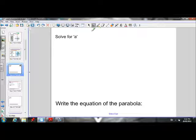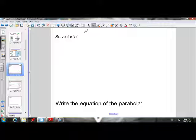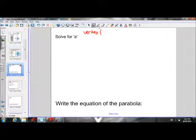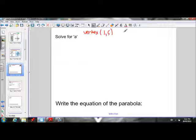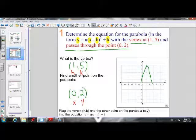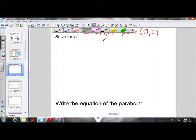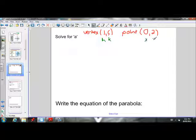Solve for a. So I'll just rewrite what we discovered on the last page. Our vertex was (1, 5), and our other point was (0, 2). So this is our h, k. This is our x, y.